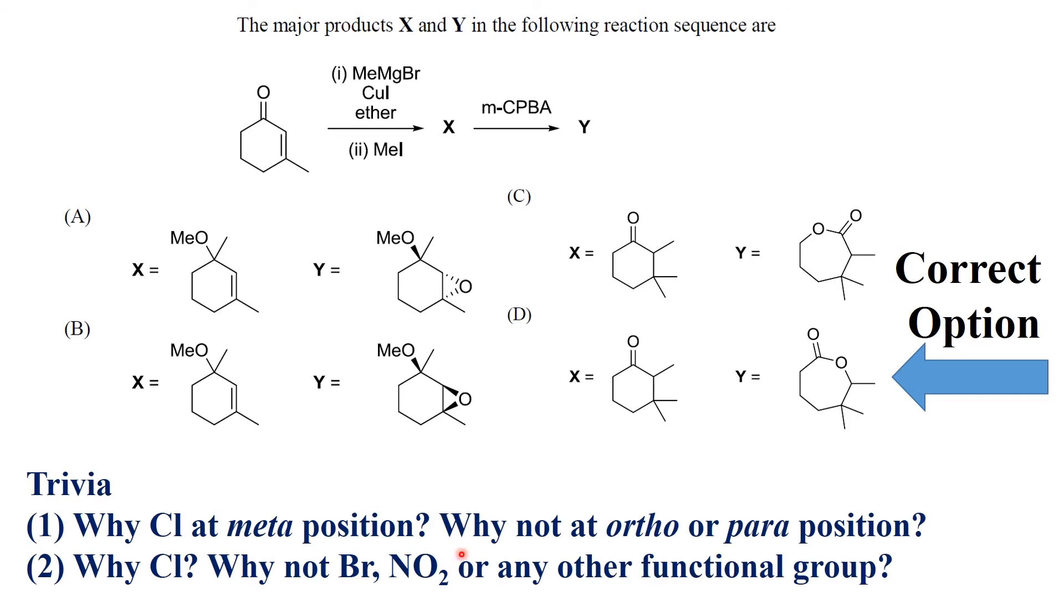Now before I end my video, I have a trivia for you people. In mCPBA, you have chloro at meta position. If chloro is at meta position, why not have ortho or para? That is one question. Second thing, if chloro is at meta position, why not have bromo, nitro, or any other functional group?